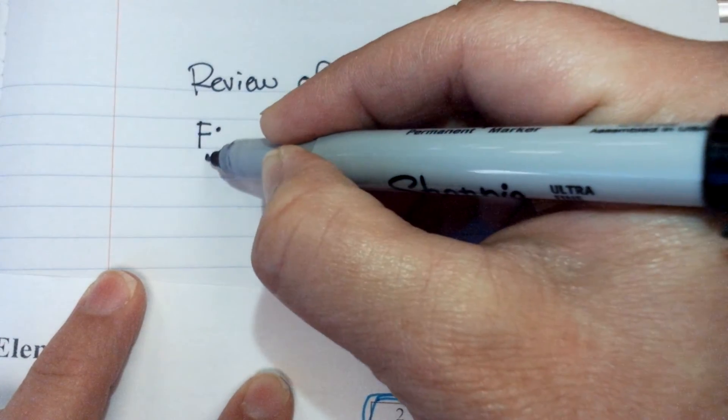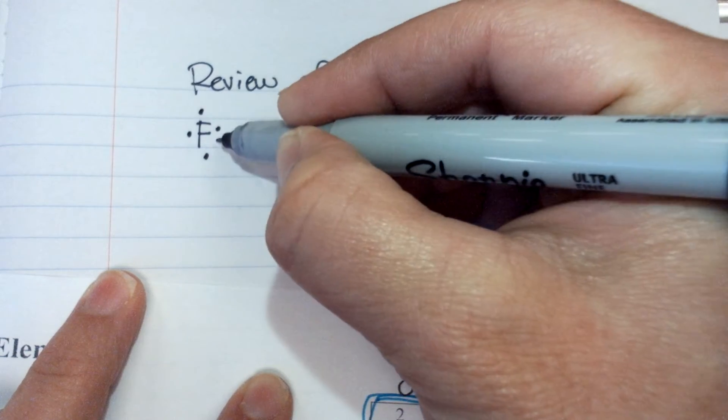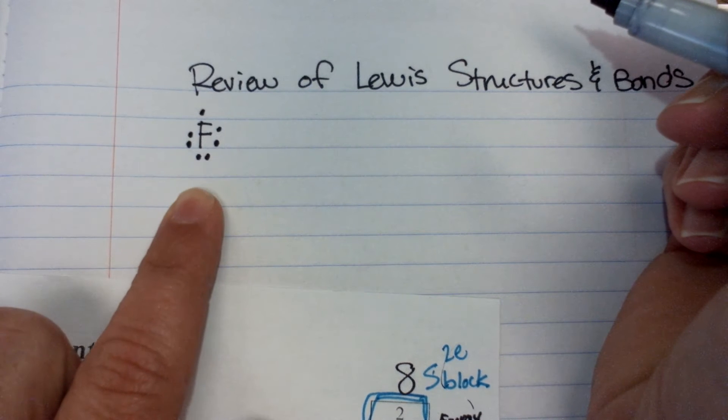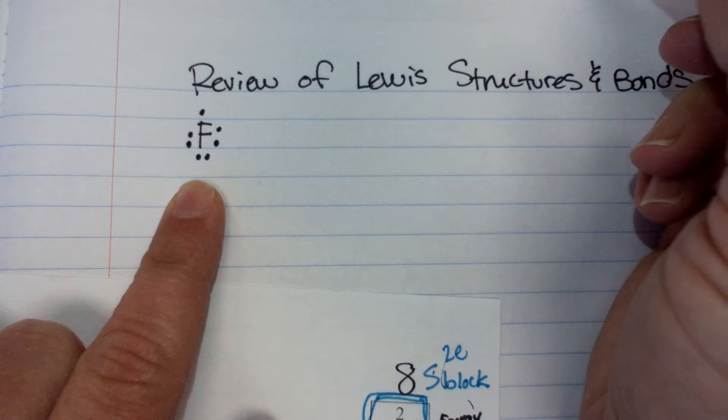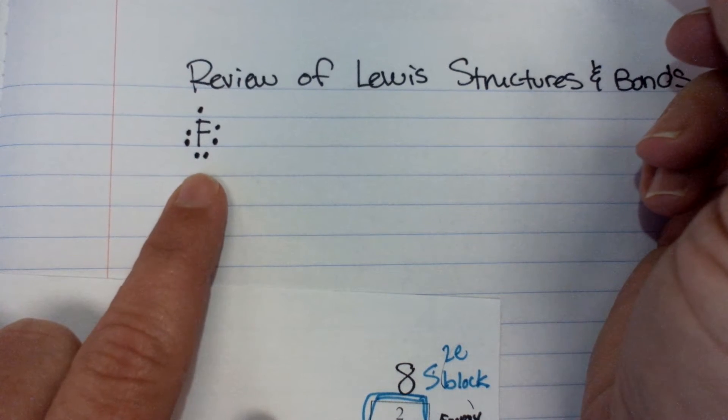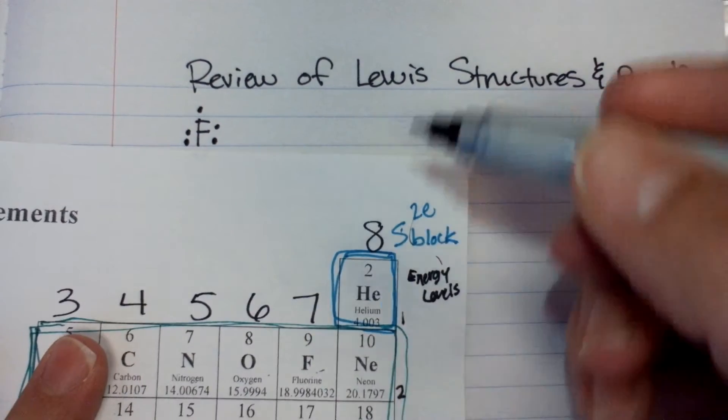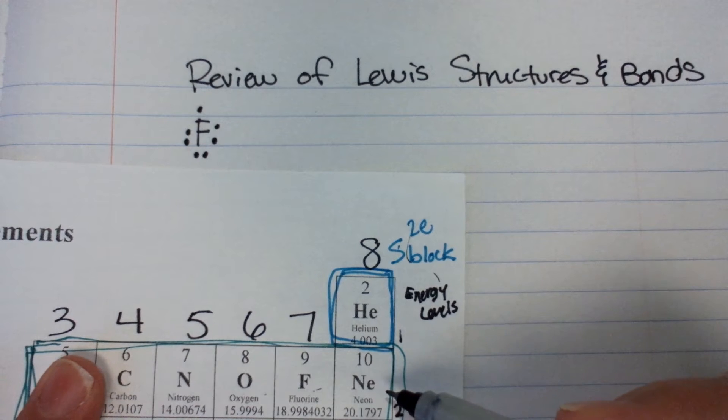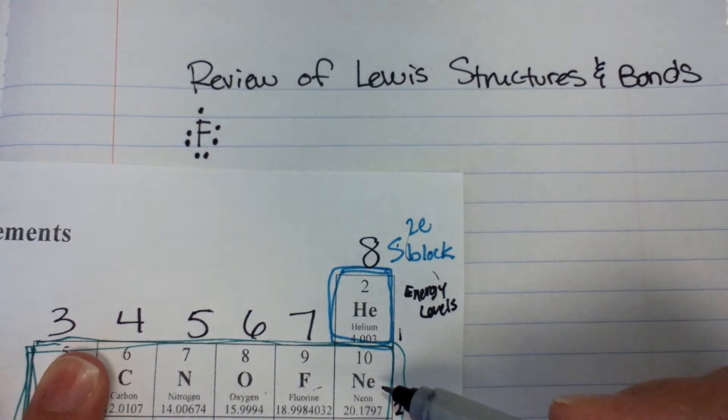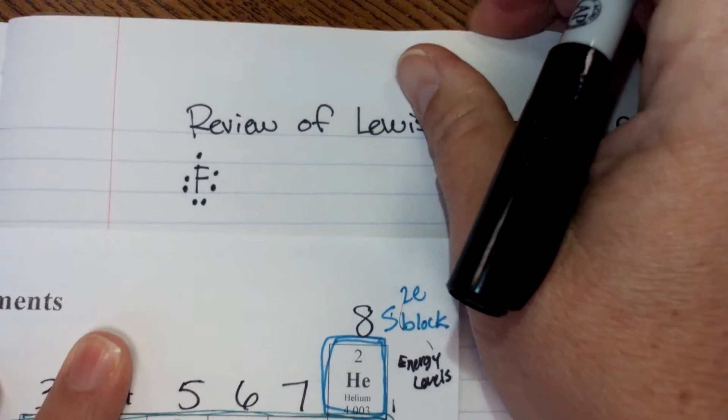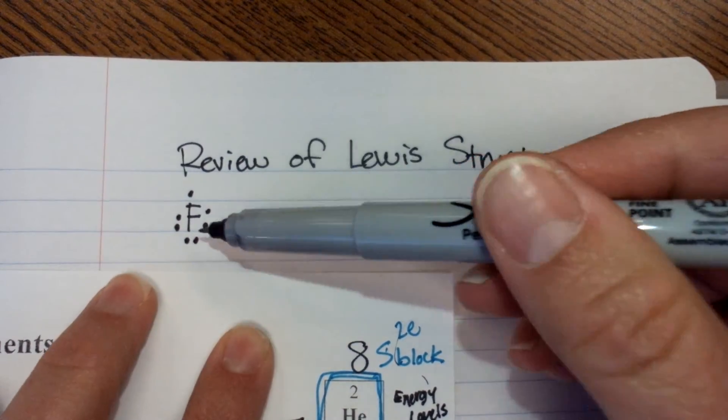That's seven. So if I look at fluorine, it has seven valence electrons: one, two, three, four, five, six, seven. How many electrons does the octet rule say that fluorine wants to have? Eight. Right, fluorine wants to look just like neon's electron configuration. Fluorine wants to have a full outer shell, which is a full octet of eight.